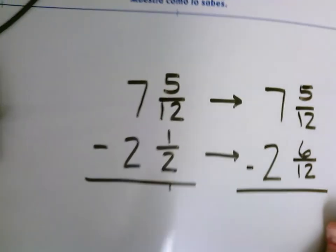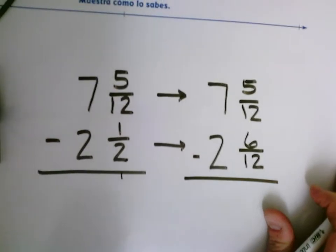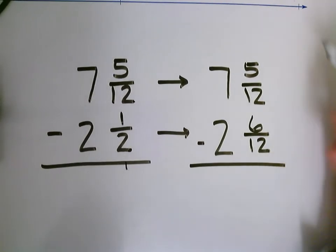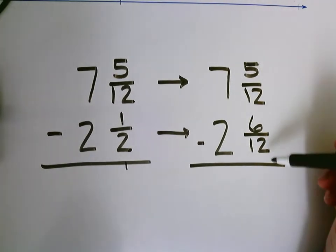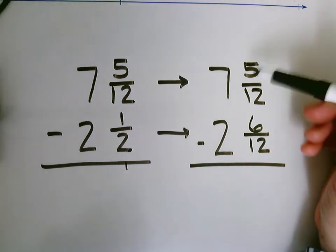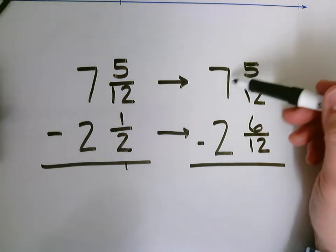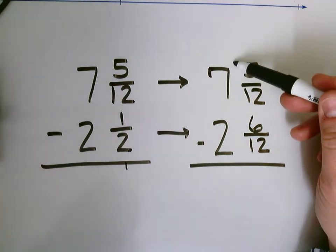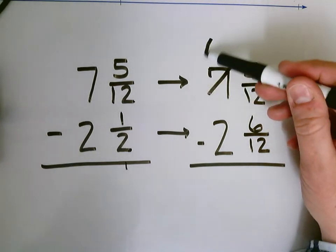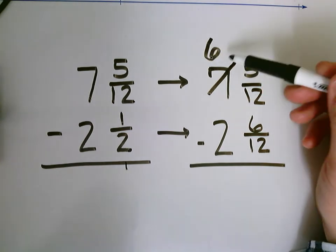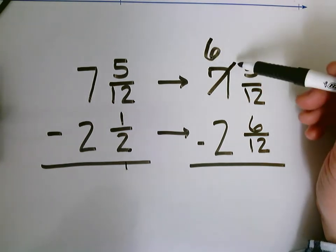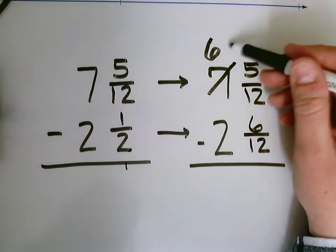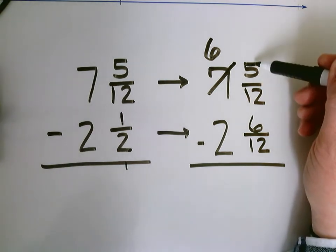Well, now I see that I have not enough twelfths up here to take 6 twelfths away. So I'm going to borrow more twelfths from 7. I'm going to regroup it, borrow from my 7. I'm going to make him 6. I'm going to take 1 away from that 7, but I'm going to take it away as twelfths, 12 twelfths. I'm going to add 12 twelfths onto my 5.